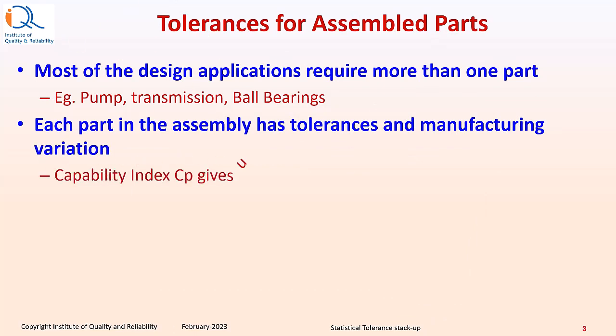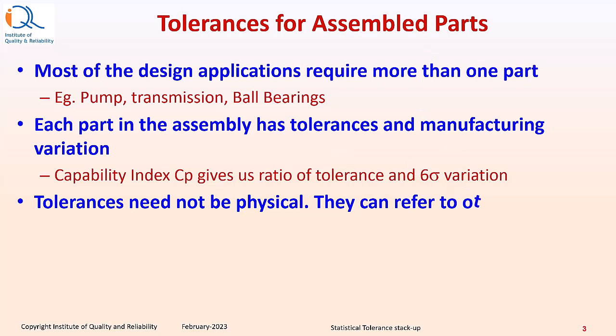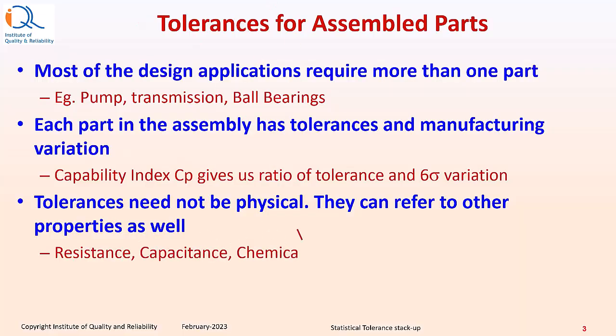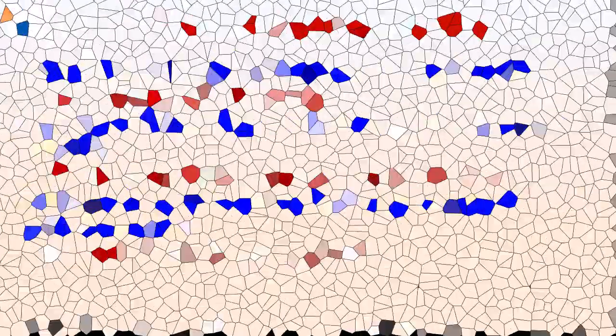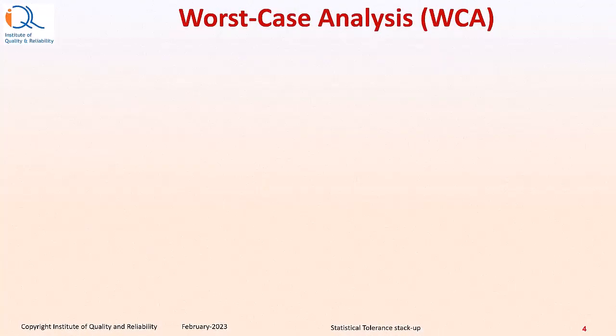Capability index CP gives us a ratio of tolerance and six sigma variation. Tolerances need not be physical. These can refer to other properties as well. For example, resistance, capacitance, chemical percentage or other properties. Let us understand the concept of worst case analysis WCA or sometimes referred as extreme value analysis.